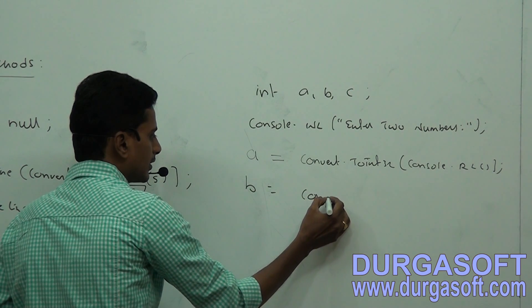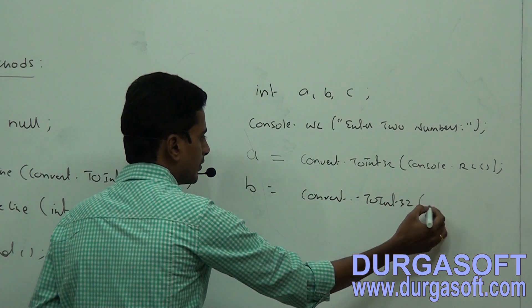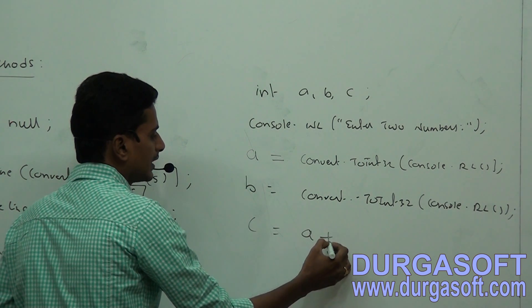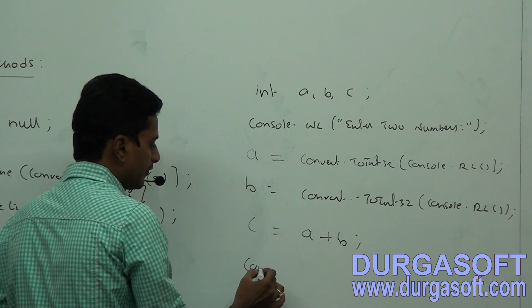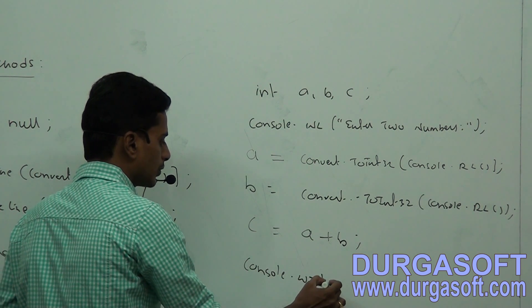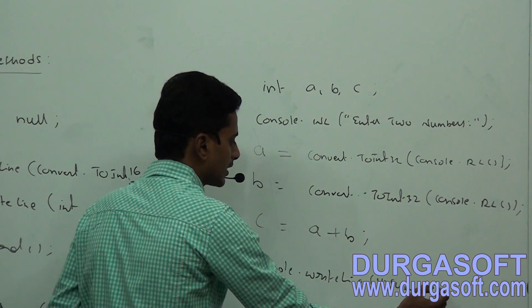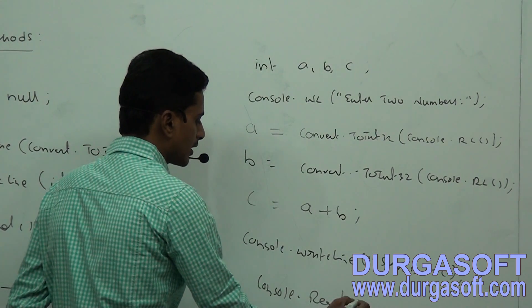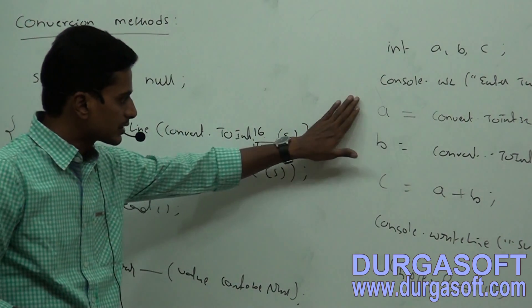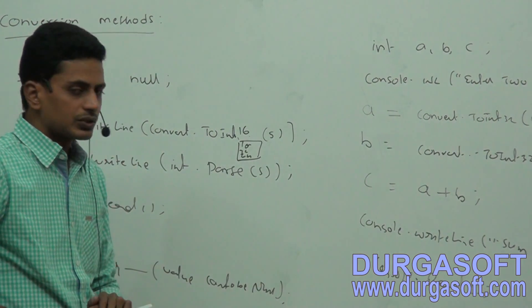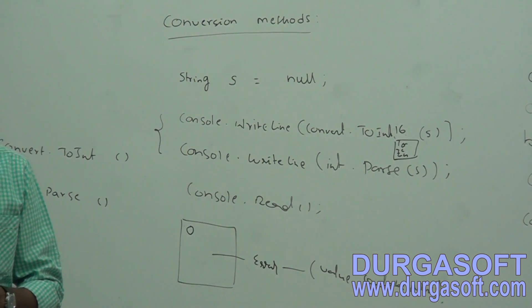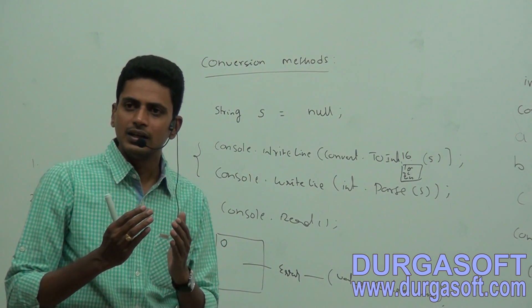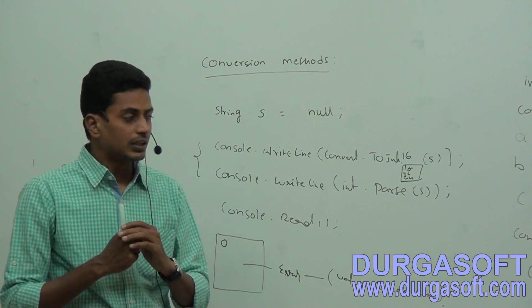So: a = Convert.ToInt32(Console.ReadLine()), b = Convert.ToInt32(Console.ReadLine()), c = a + b, then Console.WriteLine('Sum is ' + c), and Console.Read() to stay on screen. Even though the user enters integer values, the console application treats them as string by default, so we must convert from string to integer using Convert.ToInt32.